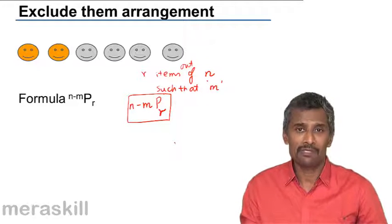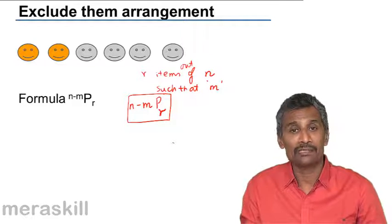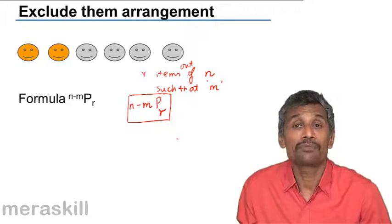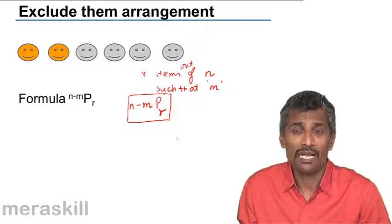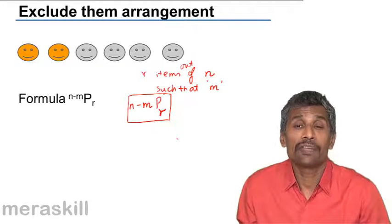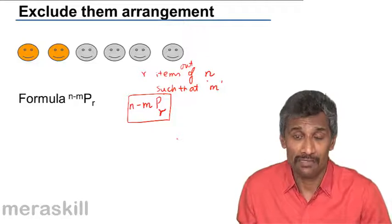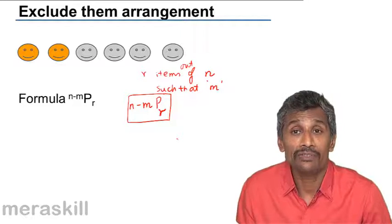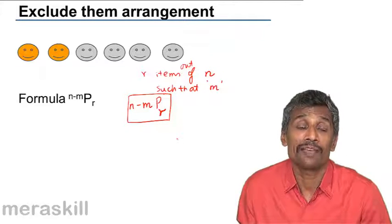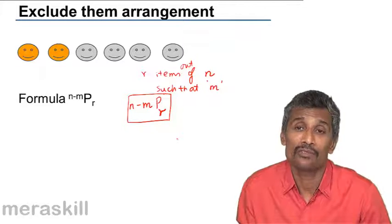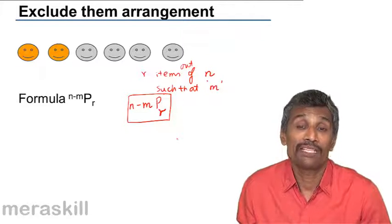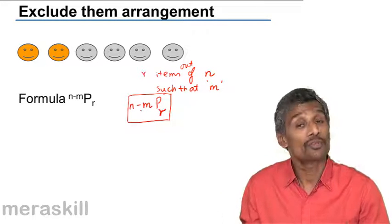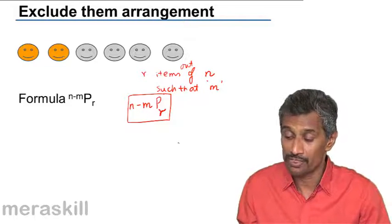This is the case of the 'exclude them' arrangement — when you have to pick up some items but some others are totally excluded from the choice. For example, suppose you need to pick up some shirts and you have 20 shirts available, but you neither want any shade of red nor any shade of green. If five of those are red or green, they are out of question. So you have to pick shirts out of 20 minus 5, which is 15. Only 15 shirts are available for your choice.